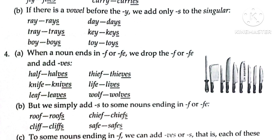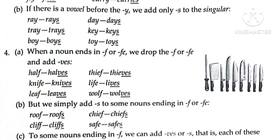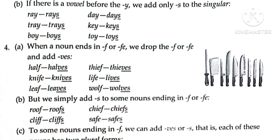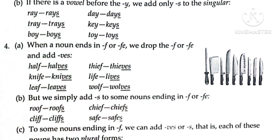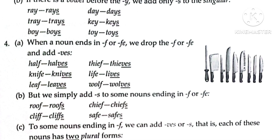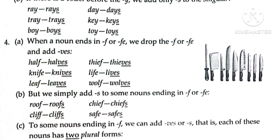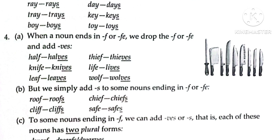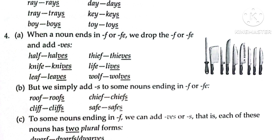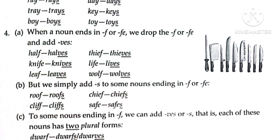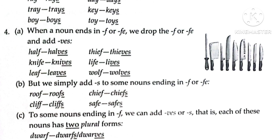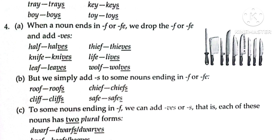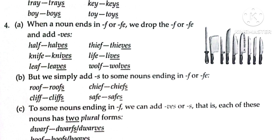Rule four, part A: when a noun ends in F or FE, we drop the F or FE and add VES. Examples: half → halves, thief → thieves, knife → knives, life → lives, wolf → wolves.